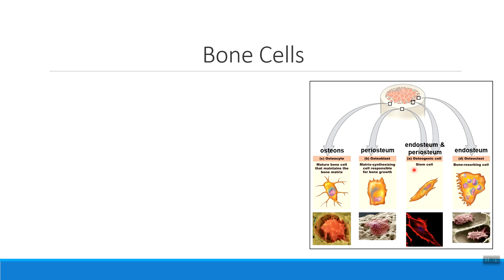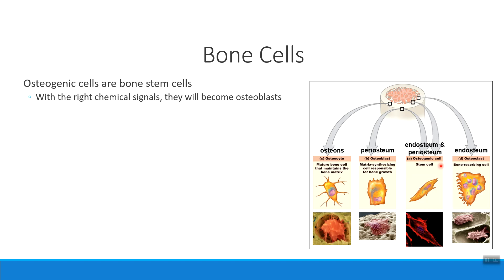Let's start with these cells here toward the middle. These cells are called osteogenic cells. When we think about osteogenic cells, these are bone stem cells, meaning that with the right kinds of chemical signals they will transition into becoming what's called an osteoblast.